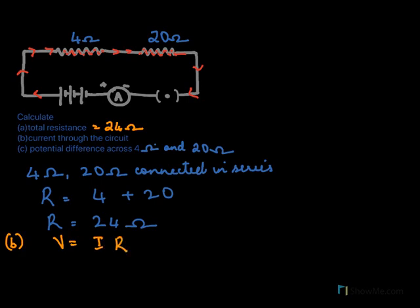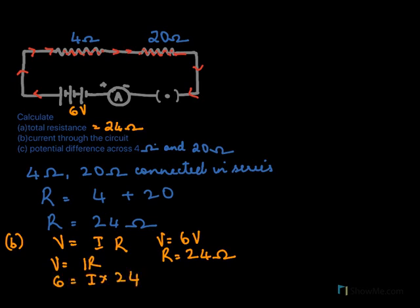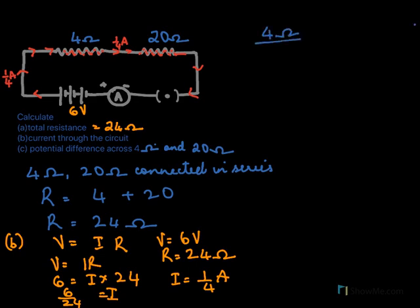The voltage is 6 volts and the resistance is 24 ohms. Applying V equals IR: 6 equals I times 24, so I equals 6 over 24, which is 1/4 amperes. The total current flowing in the circuit is 1/4 amperes.